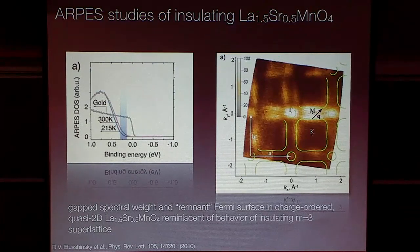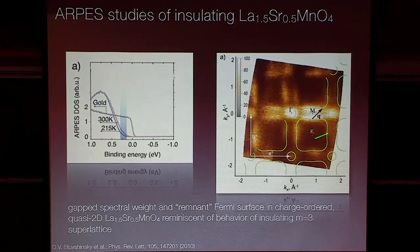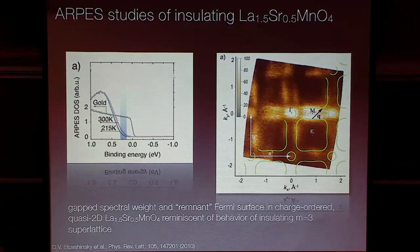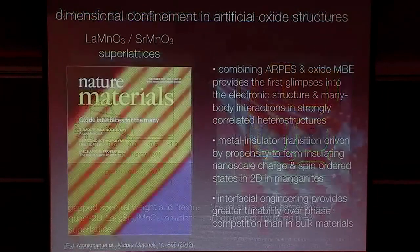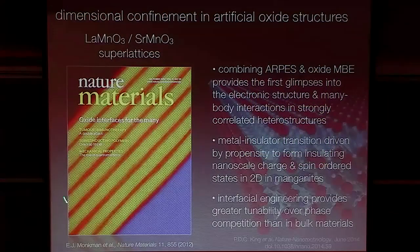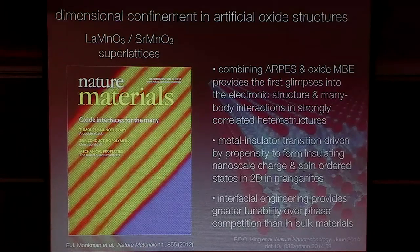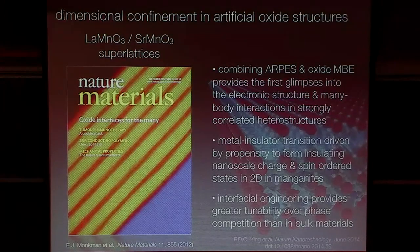People have actually looked at compounds like this and they see things very reminiscent of what we see in these superlattices. We think we're kind of exploring the same phase space of dimensionality, which is a very important tuning parameter to tune between metallic, charge-ordered, or spin-ordered ground states in materials like manganites. These were kind of the first experiments using photoemission to look at artificial correlated oxide heterostructures. We're still making our baby steps and trying to figure out what's going on.